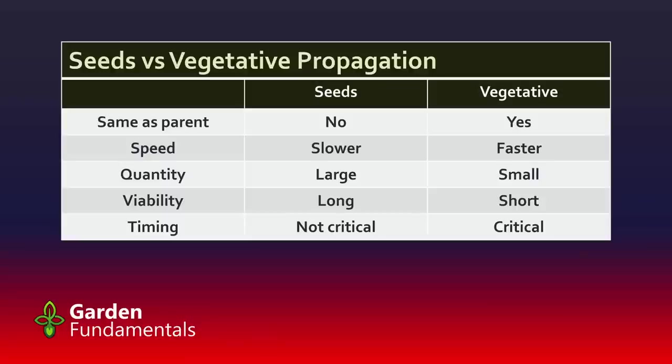When we use seeds, we're taking parts of two different plants and mixing them together to make those seeds. So genetically, every seed that germinates is going to be different than the parents. When we do vegetative propagation, the offspring is exactly the same as the parents. Growing things from seeds is generally slower, and vegetative is faster.